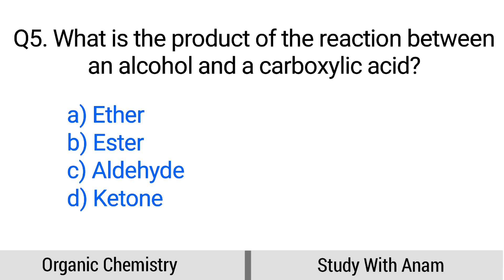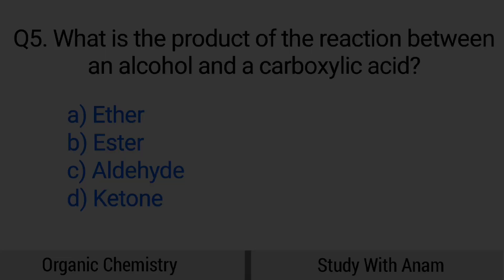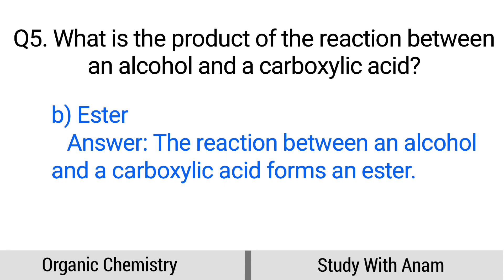Question number 5. What is the product of the reaction between an alcohol and a carboxylic acid? Option A: Ether, B: Ester, C: Aldehyde, D: Ketone. The correct option is option B, Ester. The reaction between an alcohol and a carboxylic acid forms an ester.